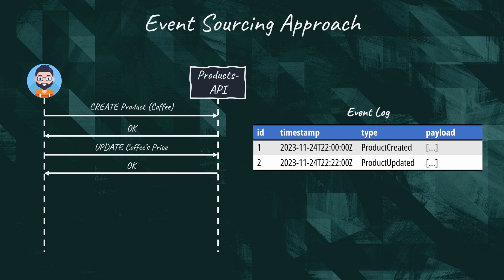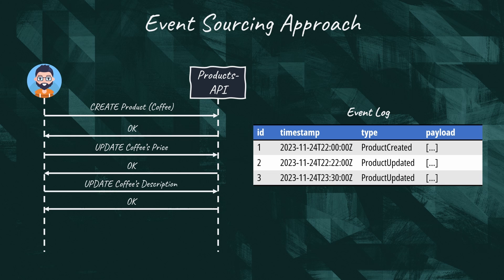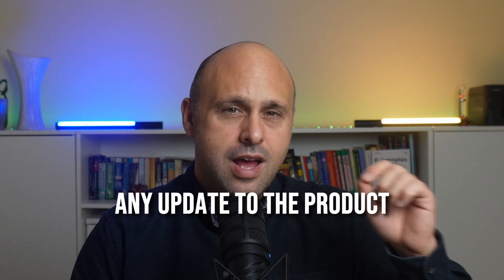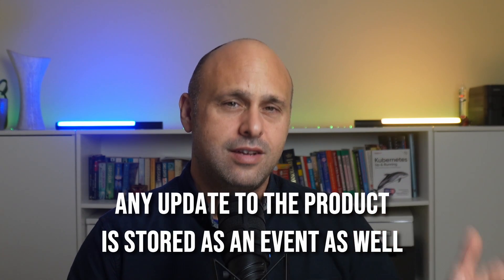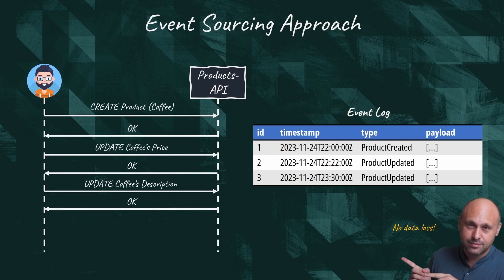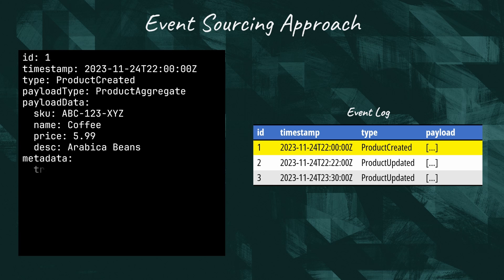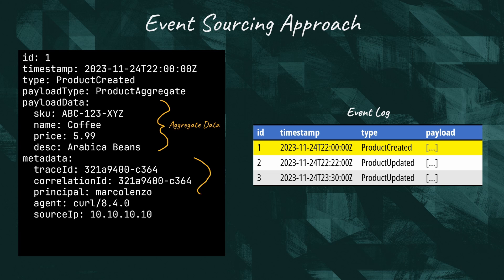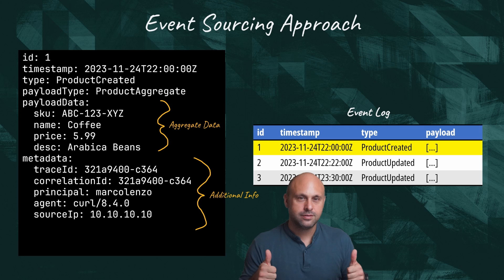When the seller creates a product, a product-created event is generated. Any update to the product is stored as an event as well. The events are rich in context — they obviously carry the product details, but they can also embed important information like the author, time, and reason for the change.